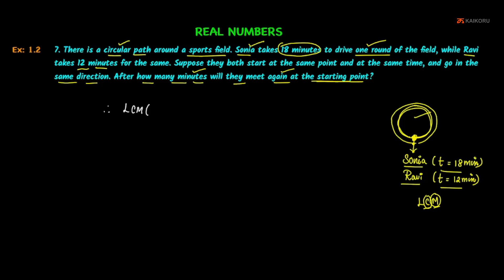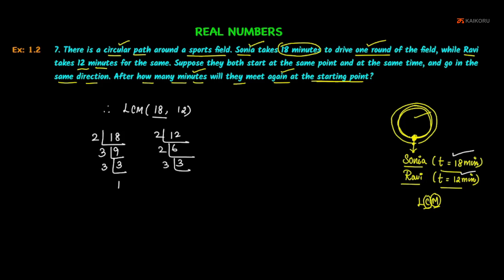Therefore, we find the LCM of 18 and 12. The prime factorization of 18: 2 × 3 × 3 × 1. The prime factorization of 12: 2 × 2 × 3 × 1.